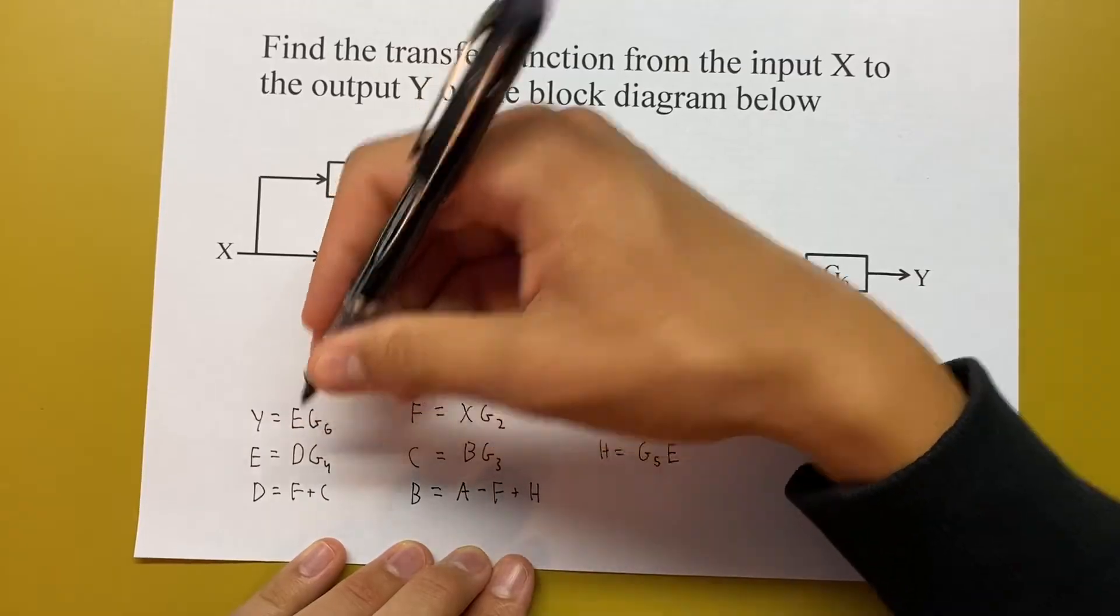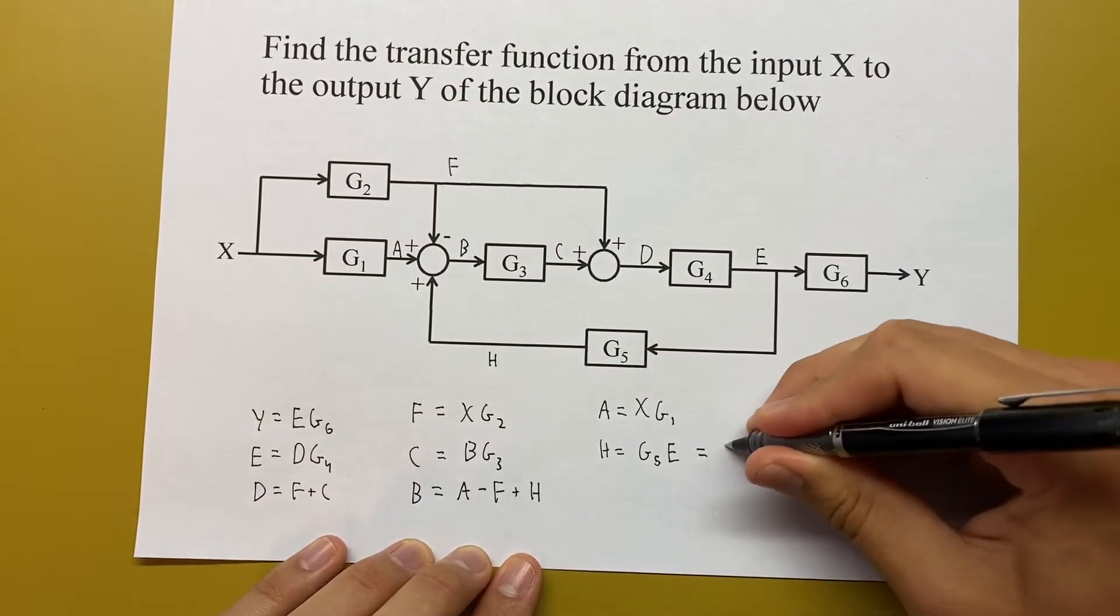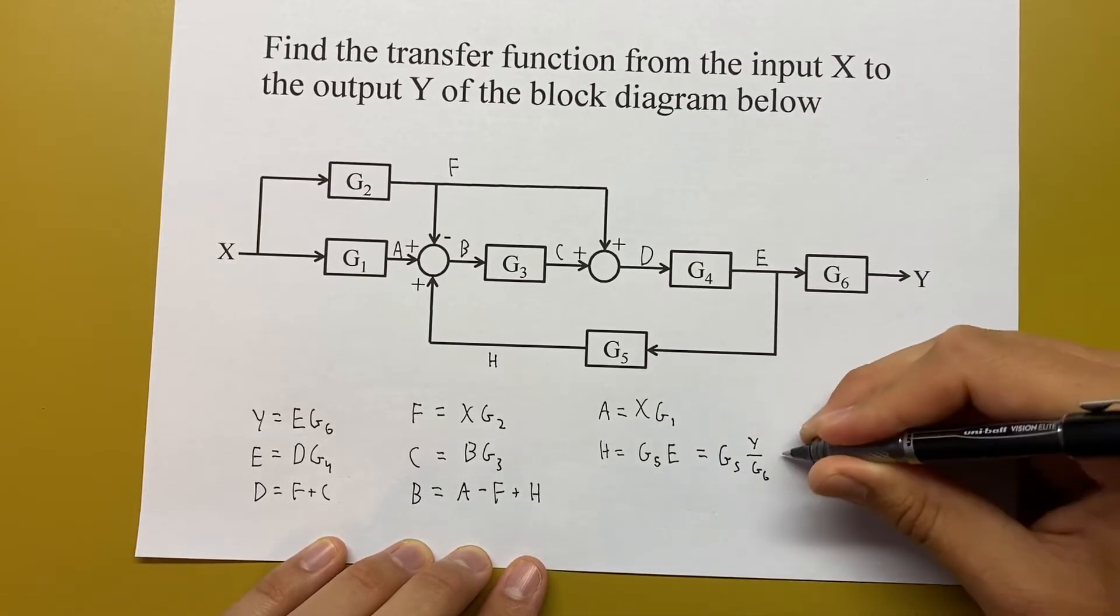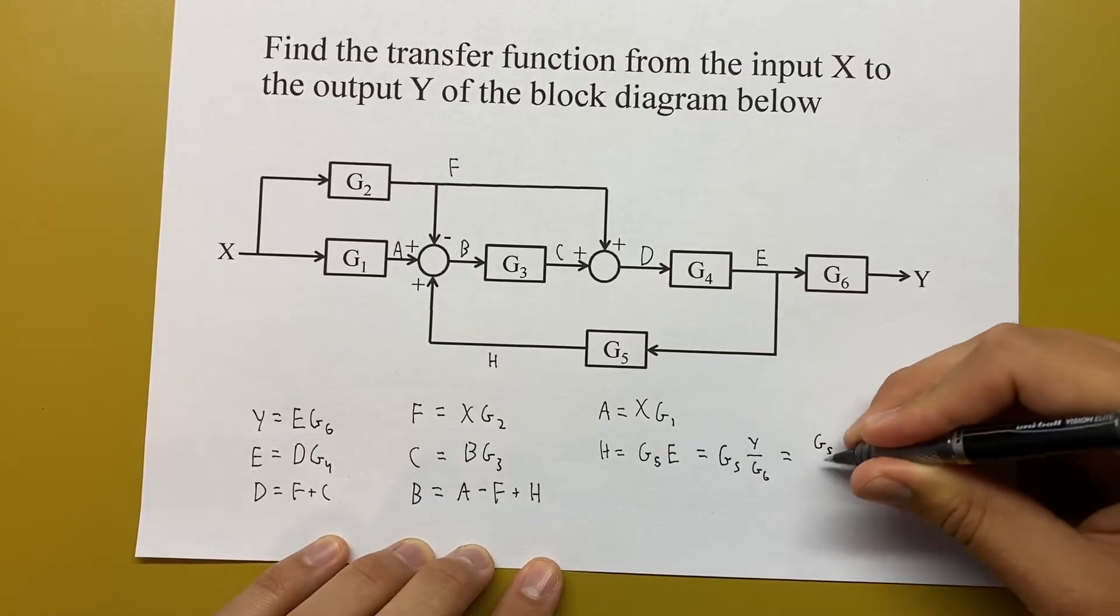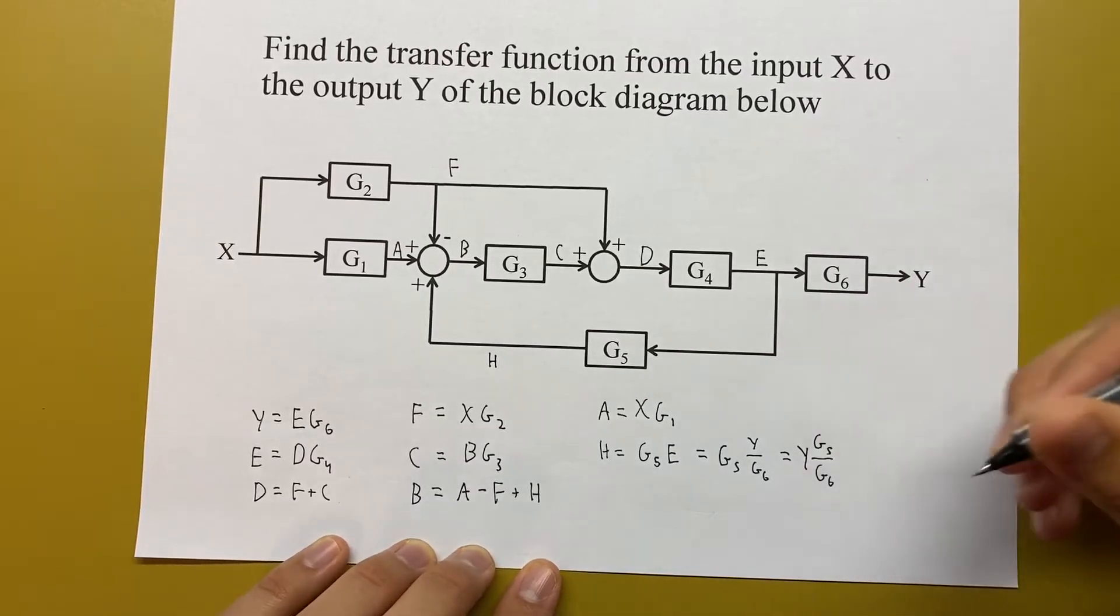So we can replace that here. We'll have G5 times Y over G6, or G5 over G6, and then that's all multiplied by Y.